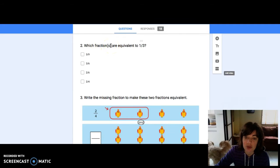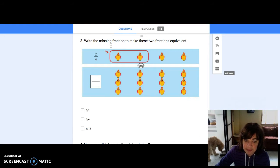Number three: write the missing fraction to make these two fractions equivalent. Well, in the first example, they've shown you that two out of four birds are circled, therefore the fraction is two-quarters.